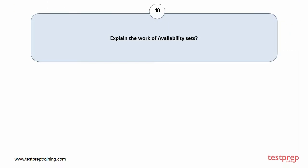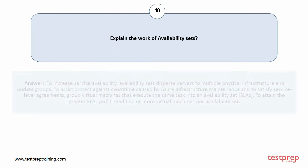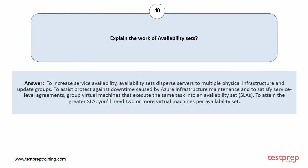Question number ten: Explain the work of availability sets. To increase service availability, availability sets disperse servers to multiple physical infrastructure and update groups. To assist protect against downtime caused by Azure infrastructure maintenance and to satisfy service level agreements, group virtual machines that execute the same task into an availability set. To attain the greater SLA, you'll need two or more virtual machines per availability set.